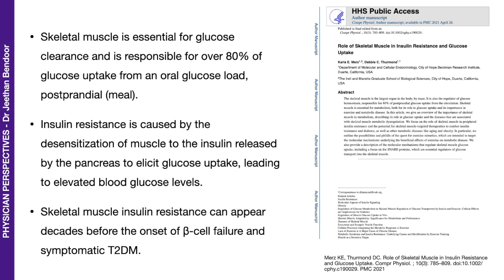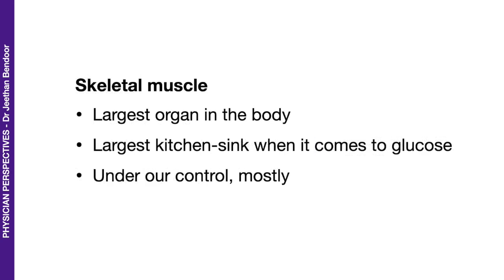Here's a paper published in 2021: 'Role of skeletal muscle in insulin resistance and glucose uptake.' Important take-home message: skeletal muscle is essential for glucose clearance and is responsible for over 80% of glucose uptake from a meal or a glucose load. That 80% is a magic number — 80% of the glucose from your food goes into the skeletal muscle. That is why skeletal muscle insulin resistance can appear decades before the onset of beta cell failure and symptomatic type 2 diabetes mellitus.